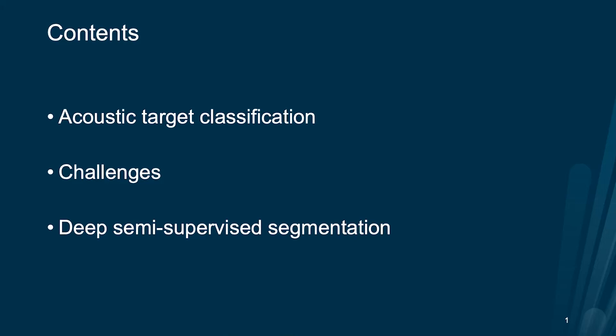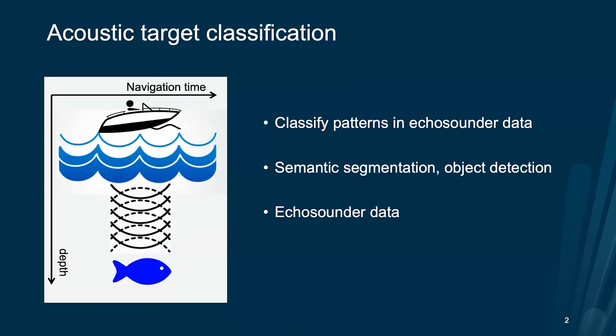This talk has three sections. First, I would like to introduce acoustic target classification and the challenges of the current method. Afterward, a deep semi-supervised segmentation method will follow. So, acoustic target classification — this term has been used in the field of marine science and fisheries, and it might be new for computer vision researchers, but the idea is quite straightforward: classify patterns in the ecosounder data. This term can be interpreted as semantic segmentation or object detection.